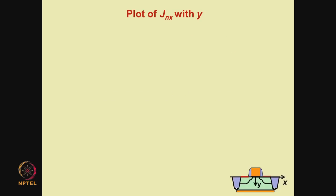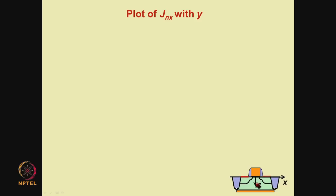Specifically, let us consider the plot of jnx with y. Referring to the diagram, jnx is the x component of jn, the x component of electron current density. x is the direction from source to drain as shown. We want to plot this x component of electron current density as a function of y.